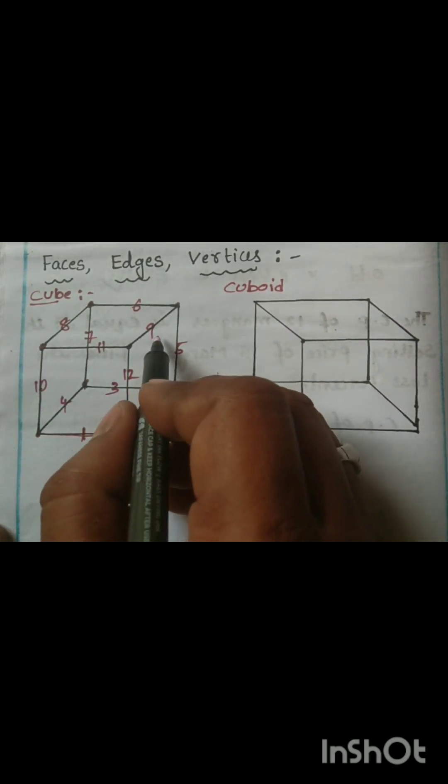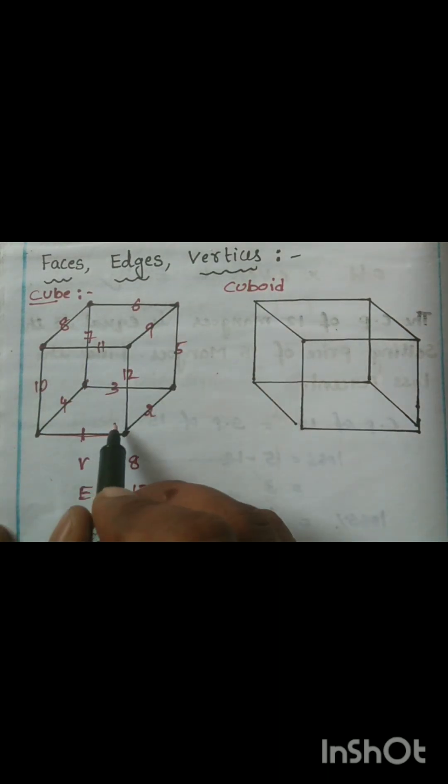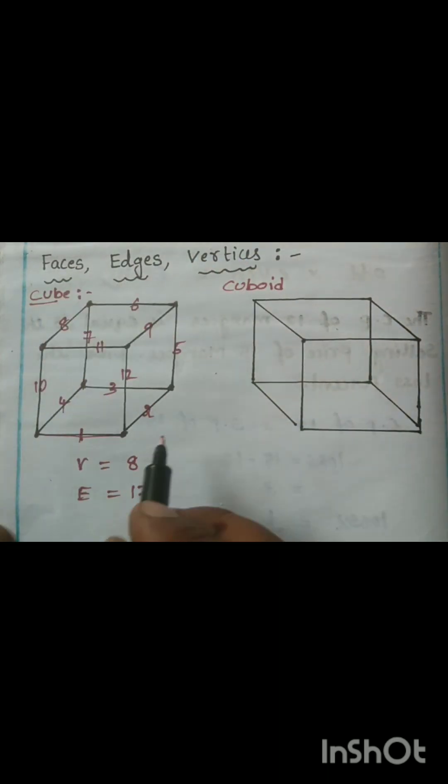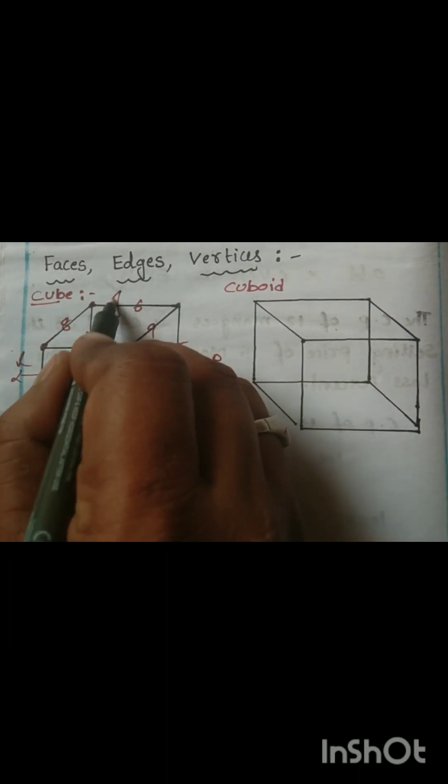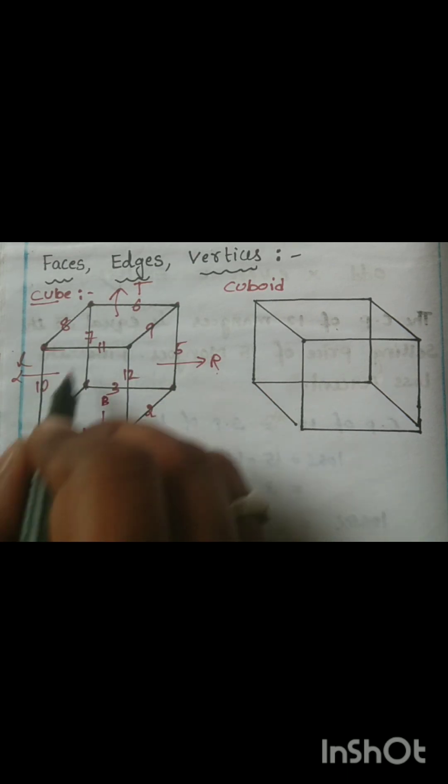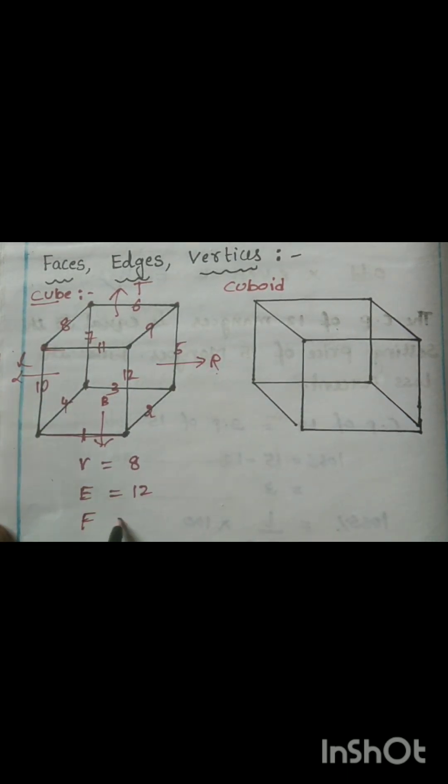Now faces. See this is front face, front face, back face, top face, bottom face, left face, right face. This is right face, this is left face, this is top face, this is bottom face, this is front face and this is back face. Total faces are 6.